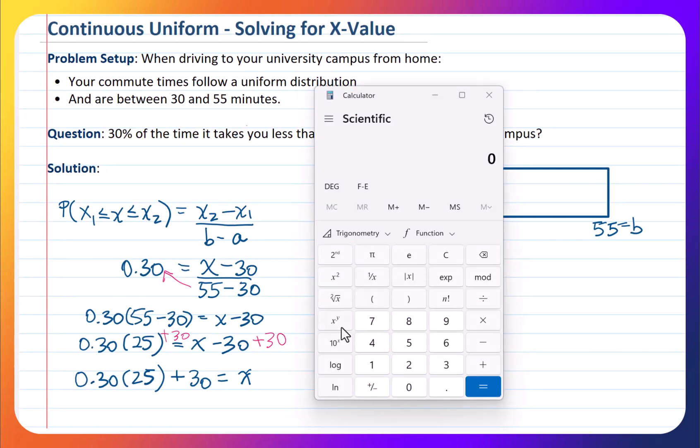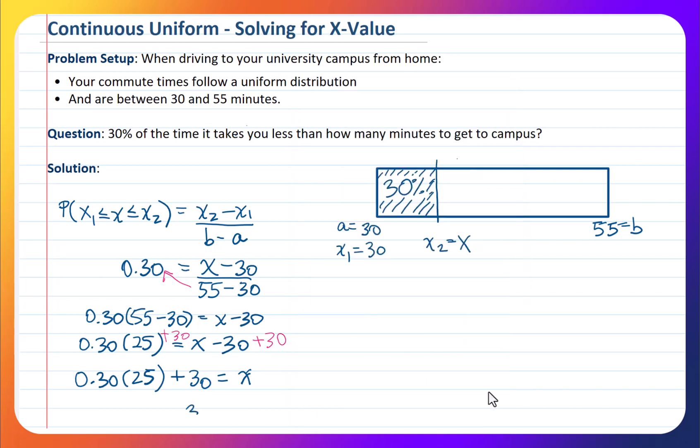So 0.3 times the 25 gives us 7.5 plus the 30 gives us 37.5. So that is that cutoff right here. Or if you will, you can say that 30% of the time, your travel times are less than 37.5 minutes.